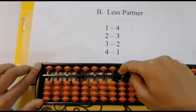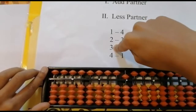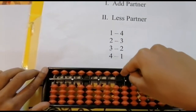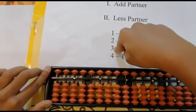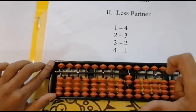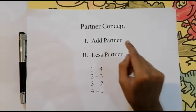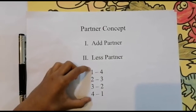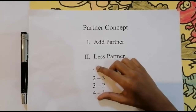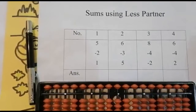In less partner, to subtract these numbers, I will add the right side numbers. For example: I have added five beads and then I need to reduce three beads. For reducing three beads I will first use my thumb finger — reduce five — and then for reducing three beads I need to add two values: add one and two. In add partner we add the left side values and reduce the right side values; in less partner, if we want to reduce the left side values we need to add the right side values.